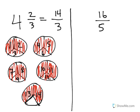And our denominator, well, it remains the same. So 4 and 2 thirds converted to an improper fraction, that's a fraction where the numerator is greater than the denominator, is equal to 14 thirds.